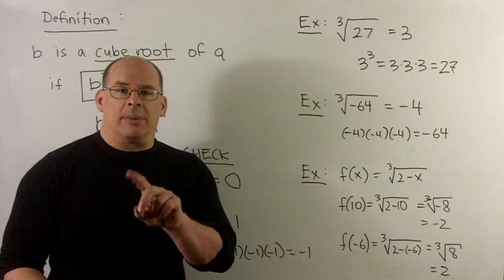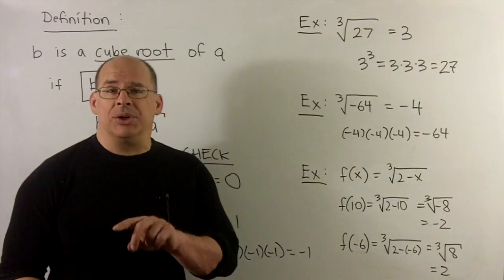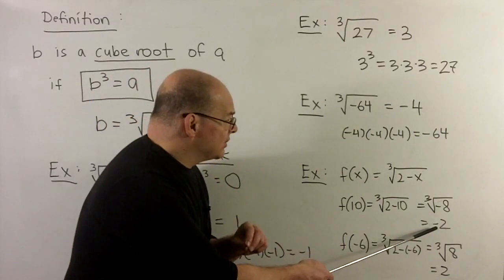Cube root of 8, well, 2 times 2 times 2 is 8, so we're going to get a 2. And then minus goes to minus to give me a minus 2.